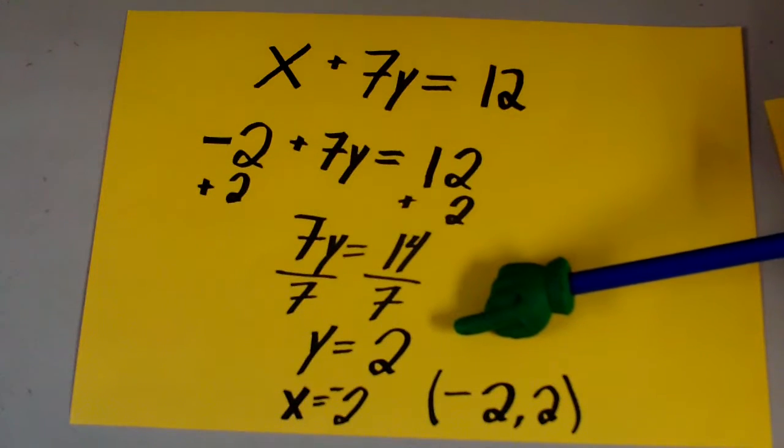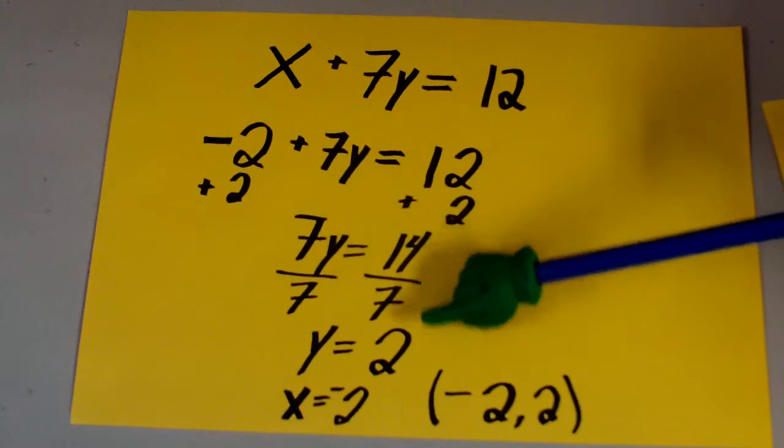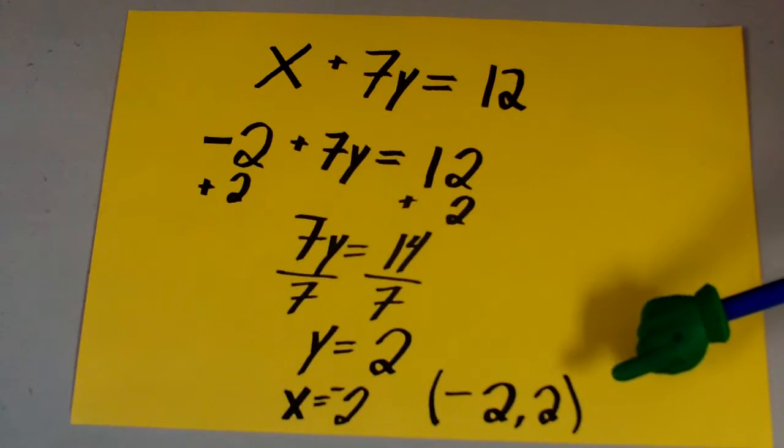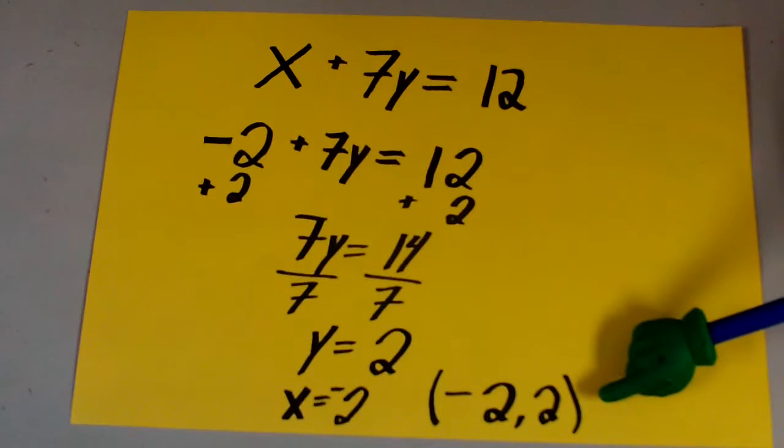Finally we need to divide both sides by 7 to get y equals 2. Since x equals negative 2 and y equals 2, the point where the lines intersect would be negative 2, 2. Thank you.